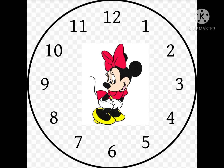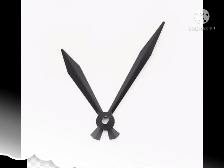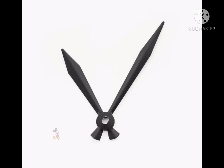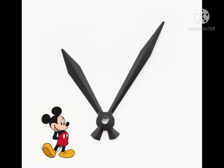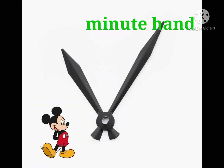Today's topic is time. In a clock you can see numbers 1 to 12 and two hands — one is short, another one is long. The short hand shows the hour and the long hand shows the minute. So we call them the hour hand and the minute hand.